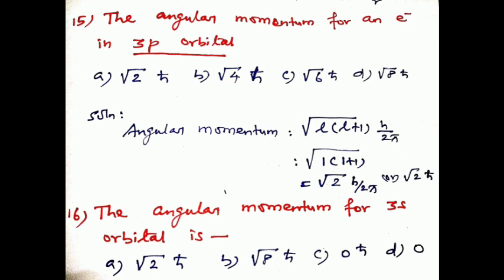Question number sixteen: the angular momentum for a 3s orbital is dash. For an s orbital, l = 0. Therefore: √[l(l+1)] · h/2π = √[0×1] · ℏ = 0. So the angular momentum is zero, option d: 0·ℏ.